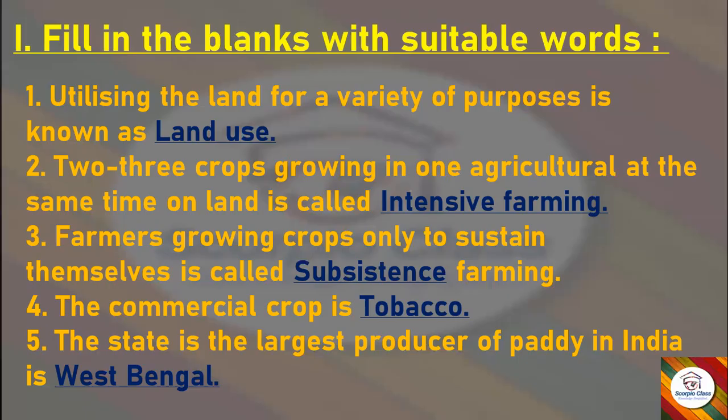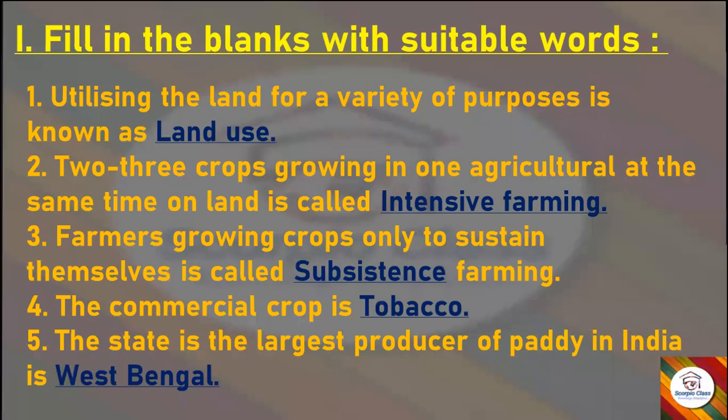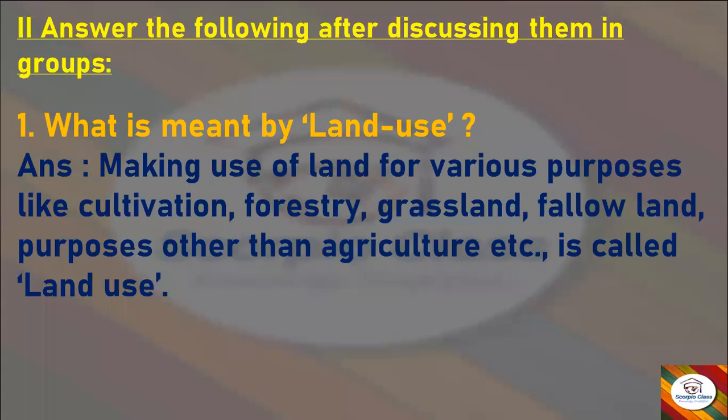Next: The commercial crop is — answer is 'tobacco'. Next: The state which is the largest producer of paddy in India is — answer is 'West Bengal'. With this we have finished Fill in the Blanks and let's go to the second section: Answer the Following.